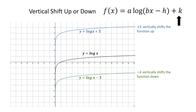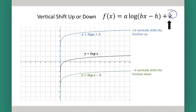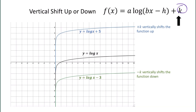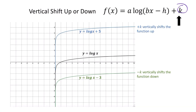We also have vertical shifts up or down, which depends on the value of k. If k is a number bigger than zero, the graph is going to go up, like the graph in blue — that's the log of x plus five. If k is less than zero, the graph is going to go down. So the log of x minus three, which is the graph in green, is shifted down from the parent function.